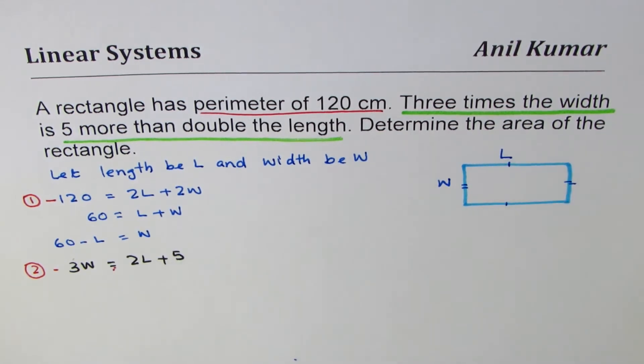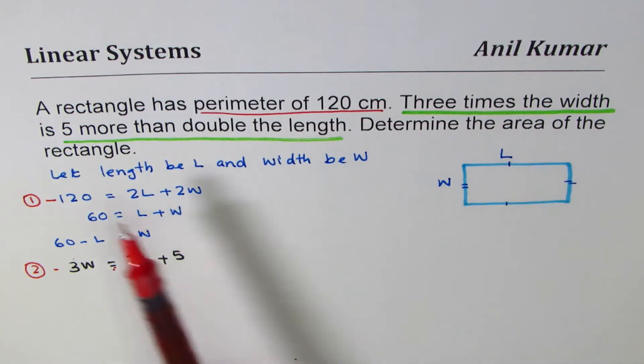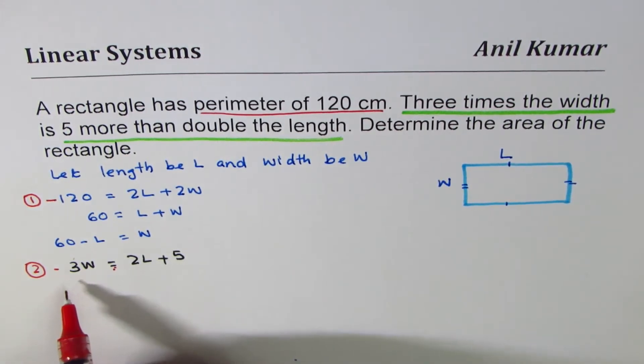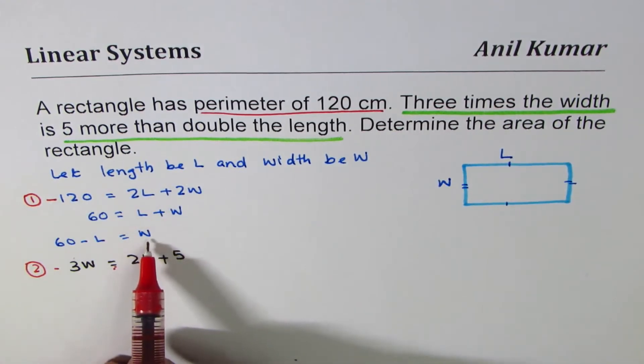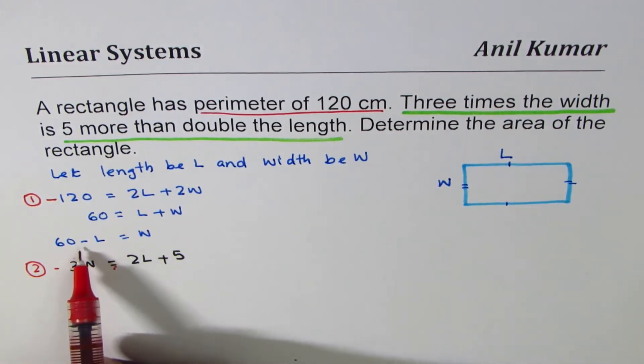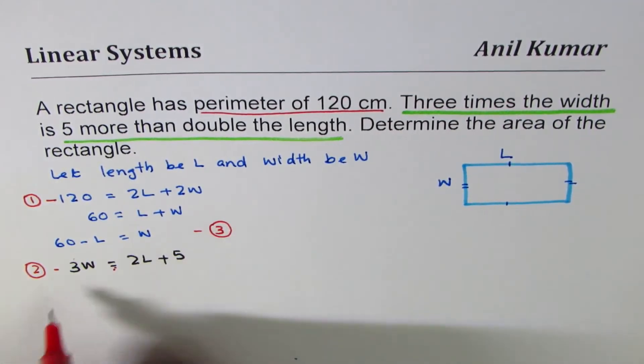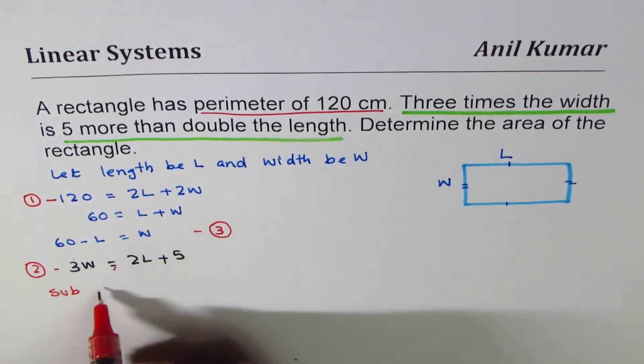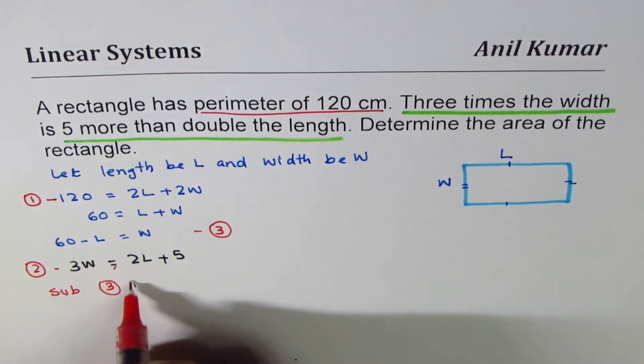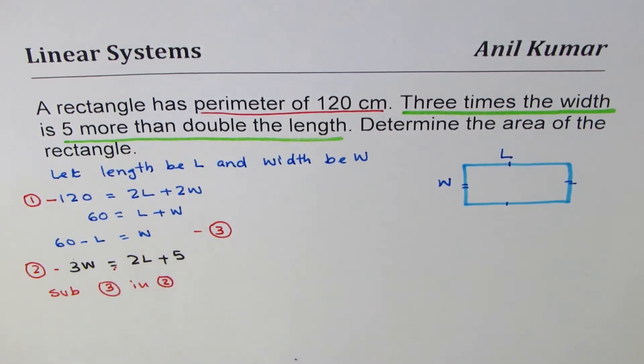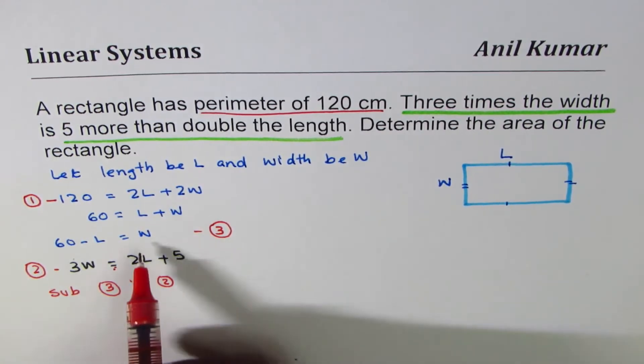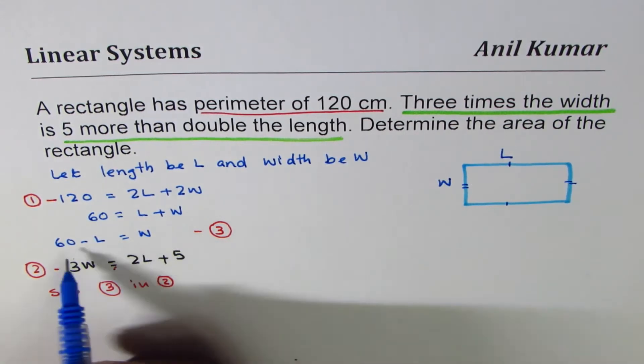We need to determine the area of the rectangle. Area is length times width, so we need to find both length and width. That's the second equation. From the first, we isolated W in the form of 60 - L. We'll call this derived equation 3, and we'll substitute equation 3 into equation 2 to get an equation in one variable.